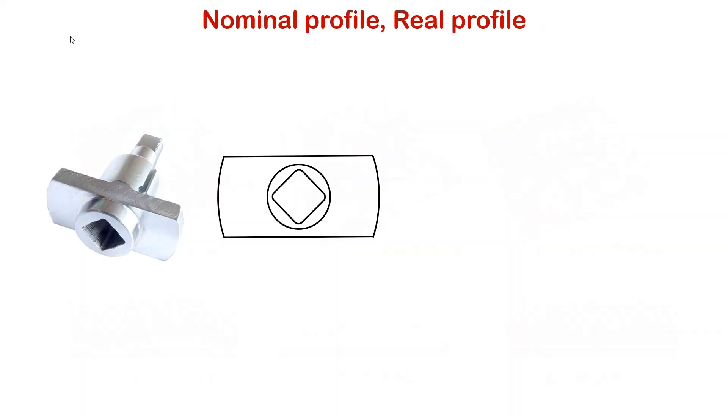The mechanical part is first imagined by the designer on his CAD software. On the drawing, he adds dimensional tolerances and surface texture tolerances. But before getting a profile on which the metrologist can calculate parameters, he must go through a conceptual stage which involves the theoretical profile on which tolerances are applied.